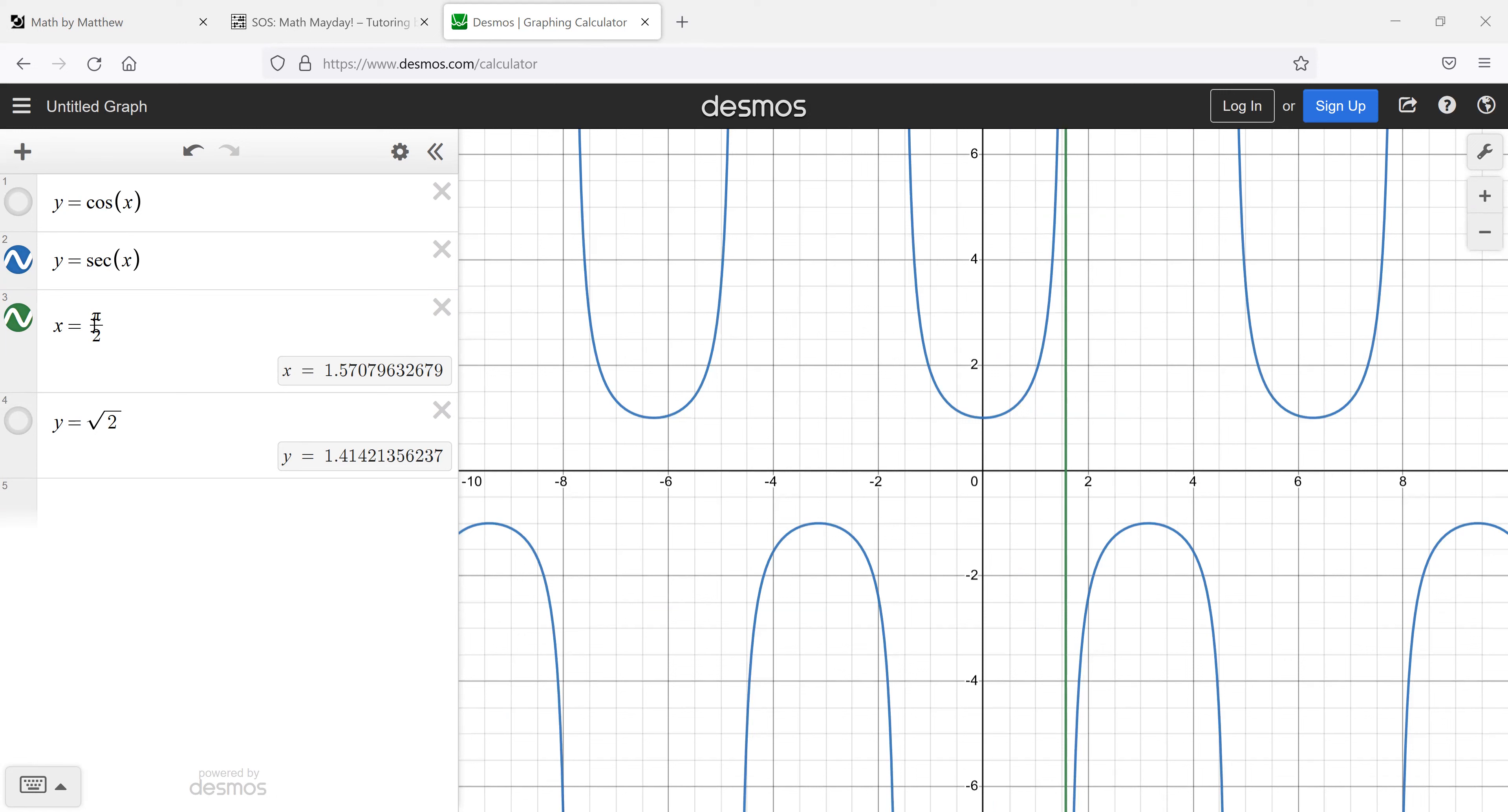Now for three π over four, you can see it does hit the curve there, but it's minus 1.414. That's minus square root of two. So at π, not π over two, at π, it's back to negative one.